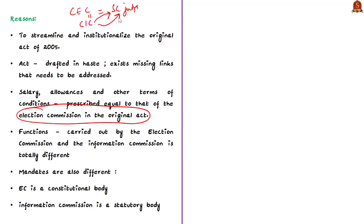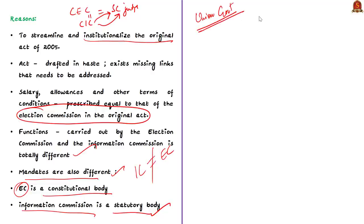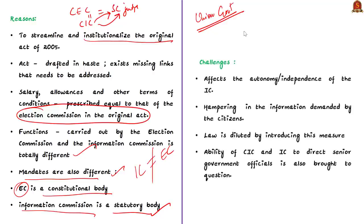Since the amendment came out, many sections including the opposition criticized the move because diluting the term, powers, and terms of service will reduce the efficiency of the RTI Act. The center's stated reason is that the functions of information commissioners and election commissioners are totally different, their mandates differ, and the Election Commission is a constitutional body while the Information Commission is a statutory body. So there is a need to rationalize their status and service conditions — salaries of a statutory body cannot be equated to a constitutional body that is equivalent to Supreme Court judges.